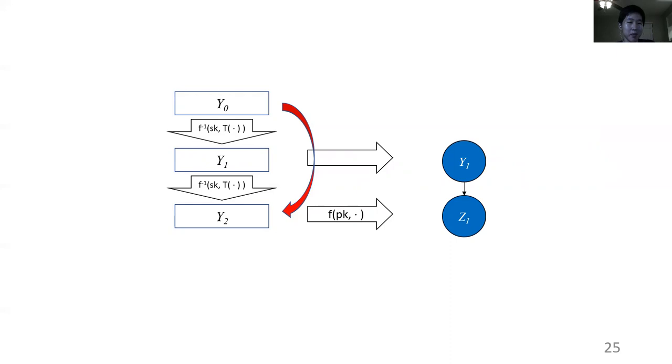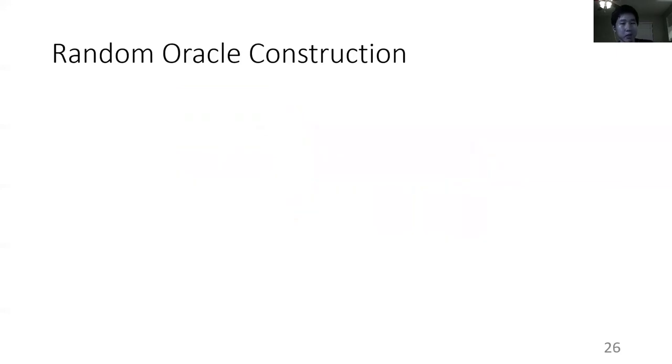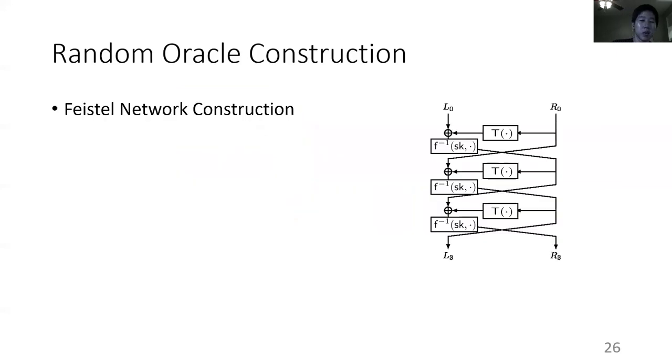And finally, we have the third result, which is that using sort of the same techniques, we can construct replica encoding schemes in the random oracle model by replacing the invertible random oracle with a Feistel network structure. And it turns out that using a very similar sequentiality and switching framework with a bit more casework involved, we can show the security of this construction as well. Thank you.